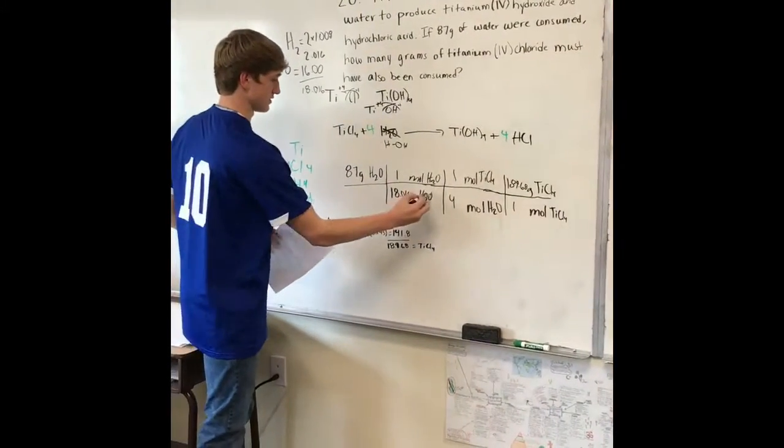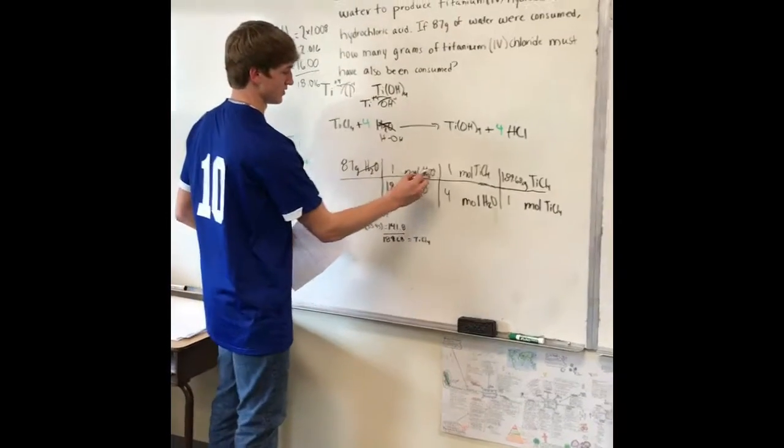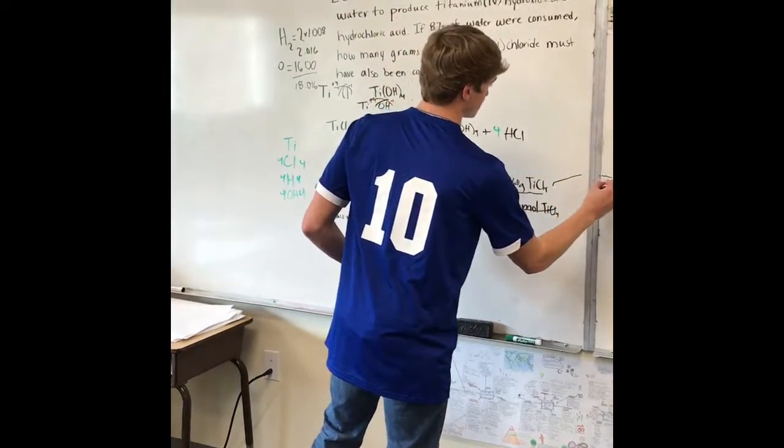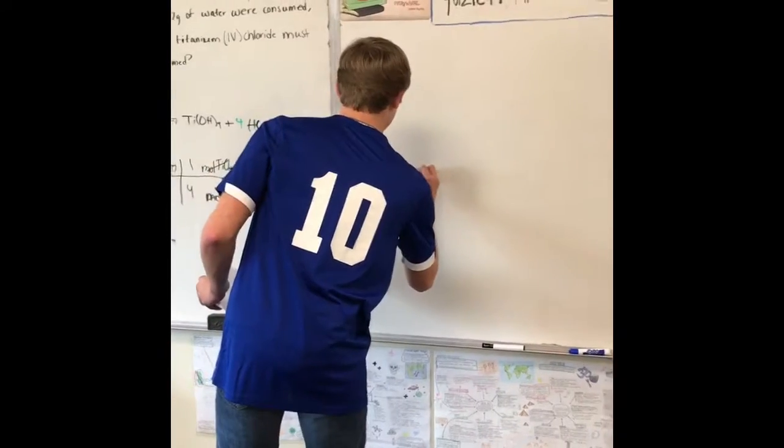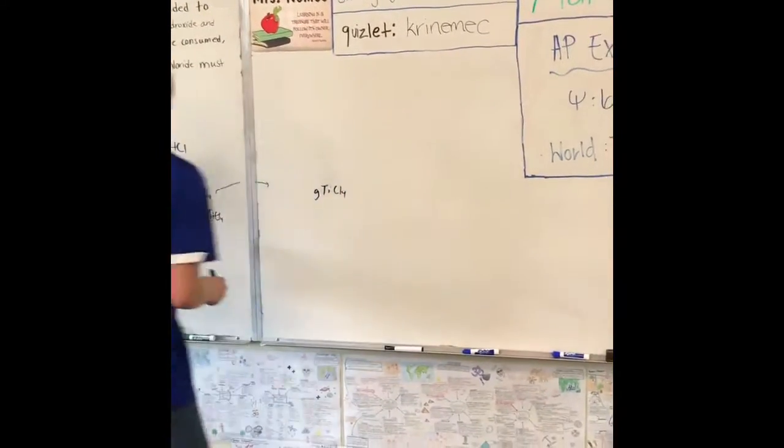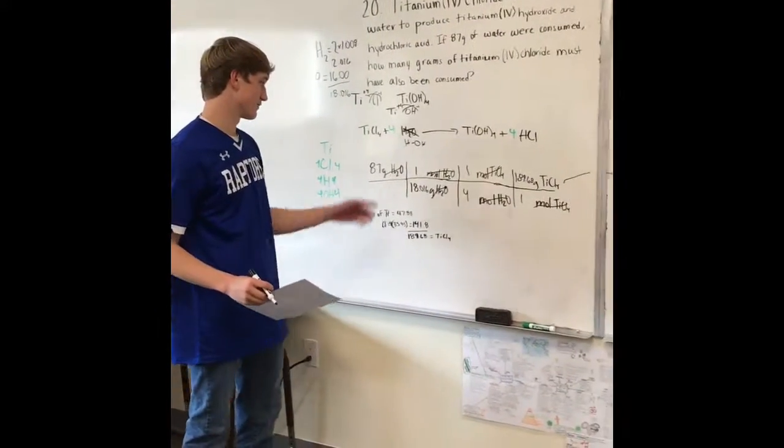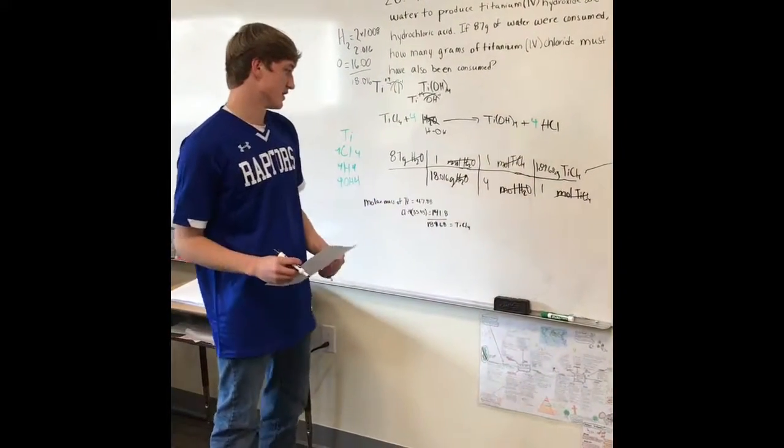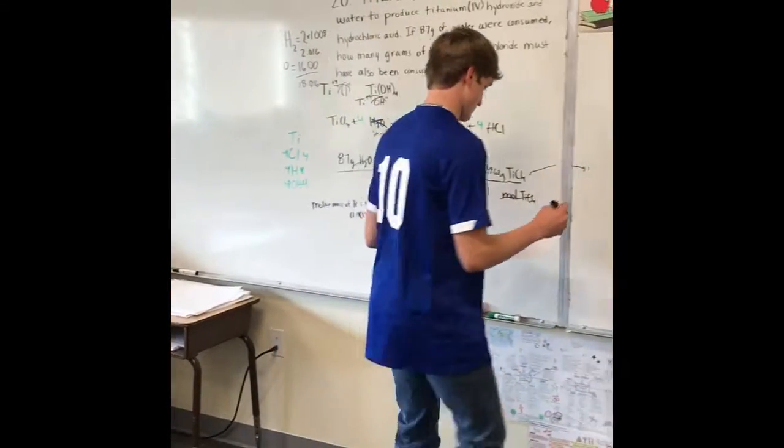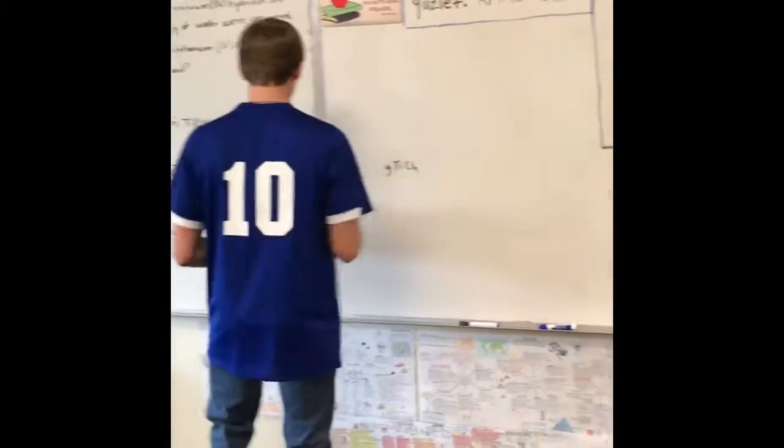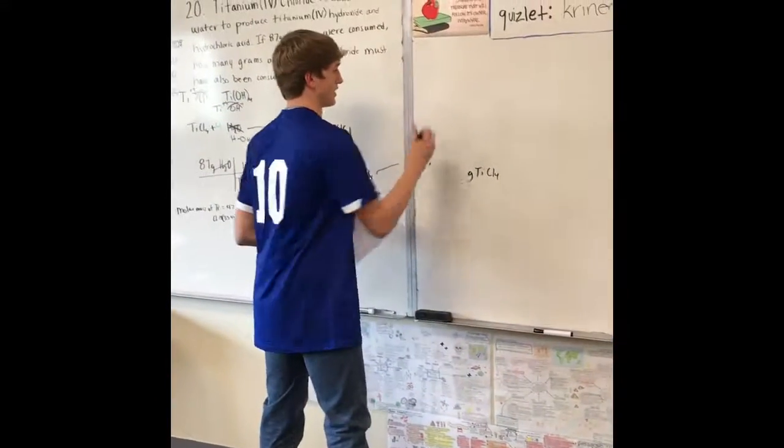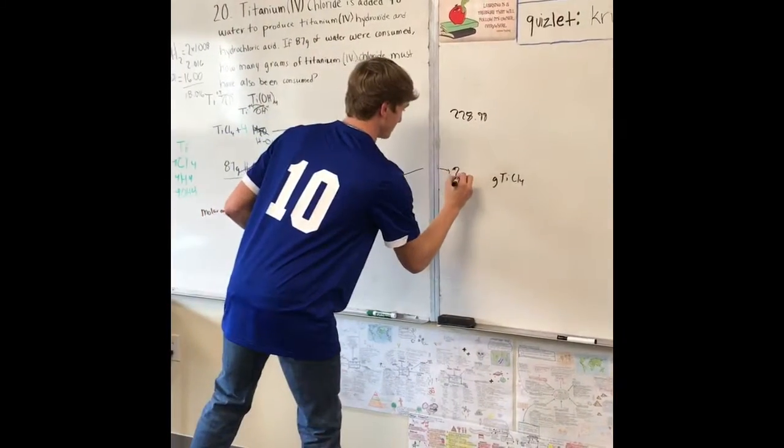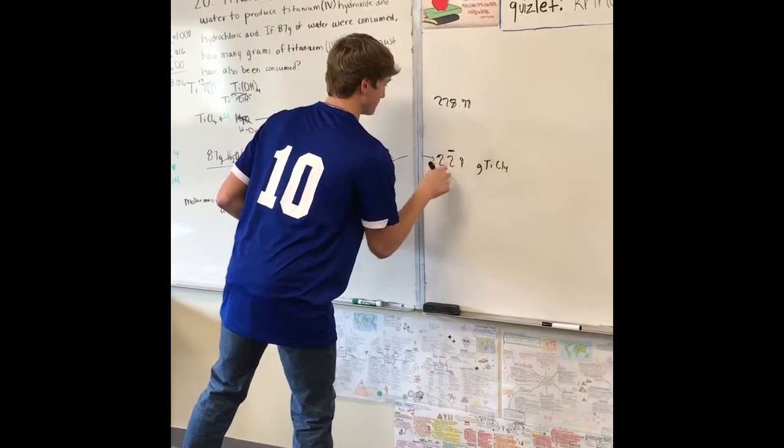The grams of H2O cancel out, the moles of H2O cancel out, and the moles of titanium chloride cancel out, leaving grams of titanium chloride. Multiply 87 by 1 by 1 by 189.68, then divide by 18.016 and divide by 4 to get 228.19. Since there are two significant figures, round it to 229 grams.